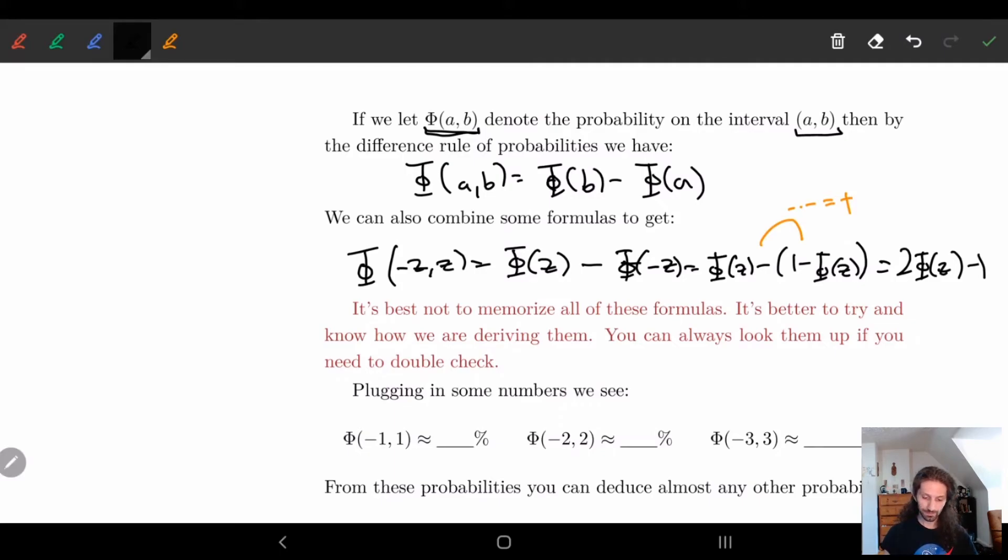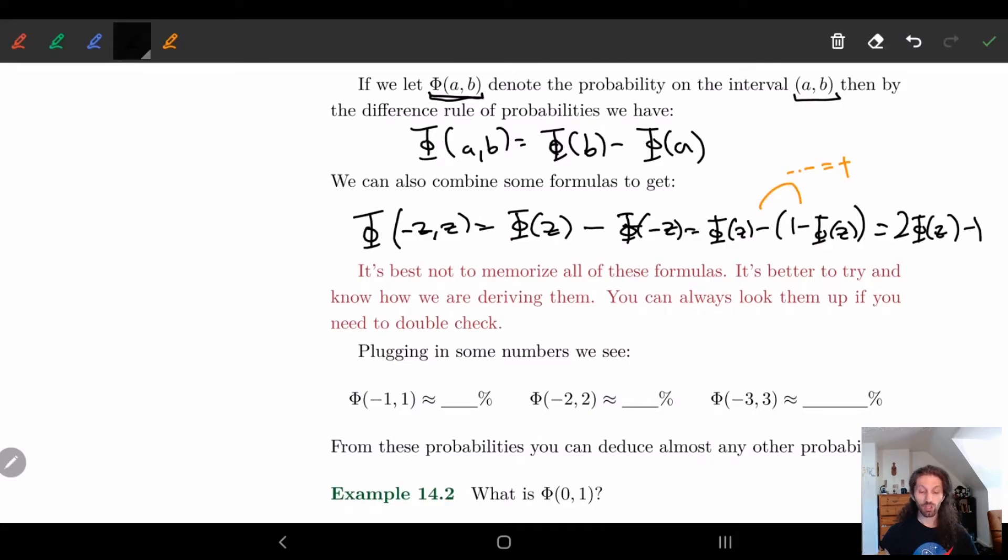So if we go to the back of the book and we actually try to plug in some of these values, what we'll see is the probability of being between -1 and 1 is actually roughly 68%, between -2 and 2 gives us 95%, and -3 and 3 is 99.7%.